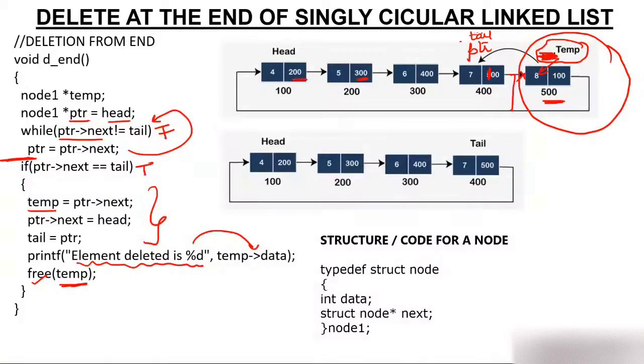Finally, you will have the updated structure where 8 is no more. So this was the coding of delete at the end of a singly circular linked list, which was very easy coding.